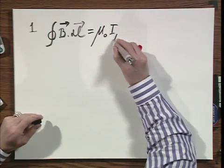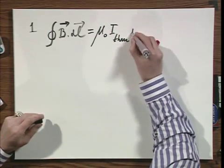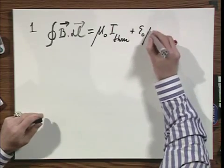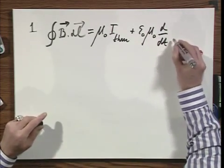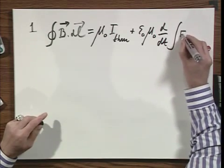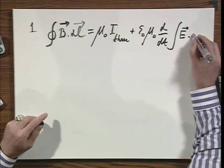Equals mu zero times I through plus, and here comes the famous term by Maxwell, d/dt integral of E dot dA.